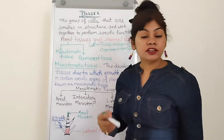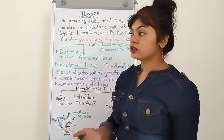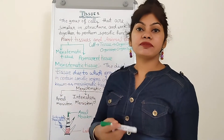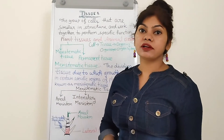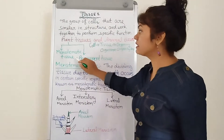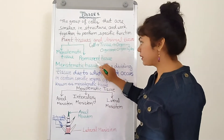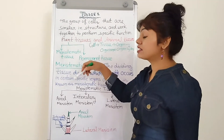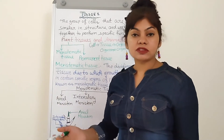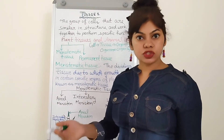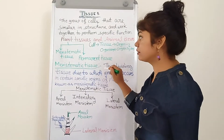Now, plant tissue and animal tissue — today we are doing plant tissue. Plant tissue is divided into two types on the basis of their function: first, meristematic tissue, and second, permanent tissue. Meristematic tissue is again classified into three kinds on the basis of their position or location.